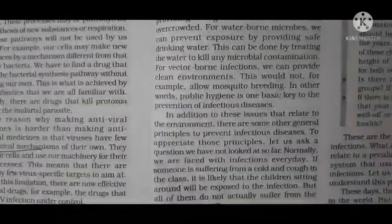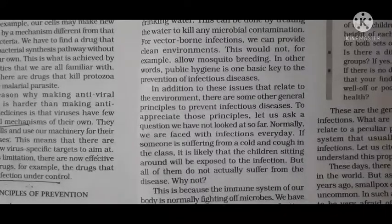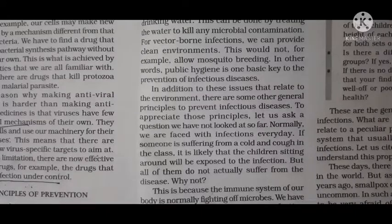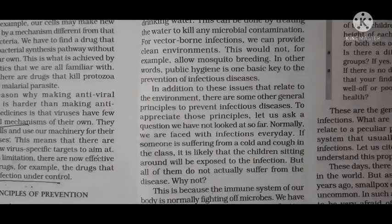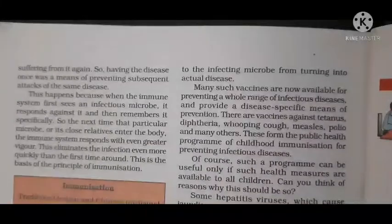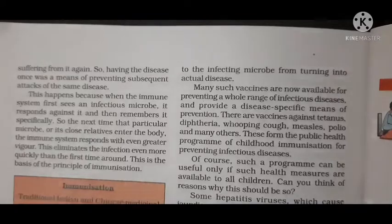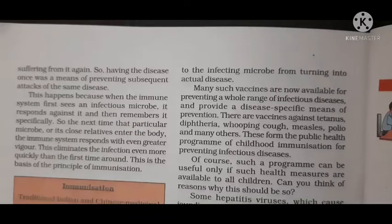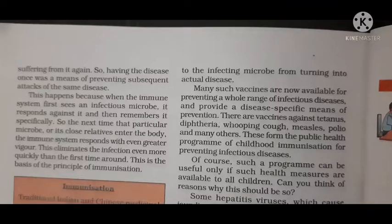Those safe people took care of the smallpox patients without fear, because they had already suffered from smallpox and their bodies were protected. They had permanent immunity — they would not get smallpox again. This is also true for chickenpox: once infected, a person gets permanent immunity and does not get that disease again. This happens because when the smallpox microbe enters the body, our body responds to it and produces certain antibodies.